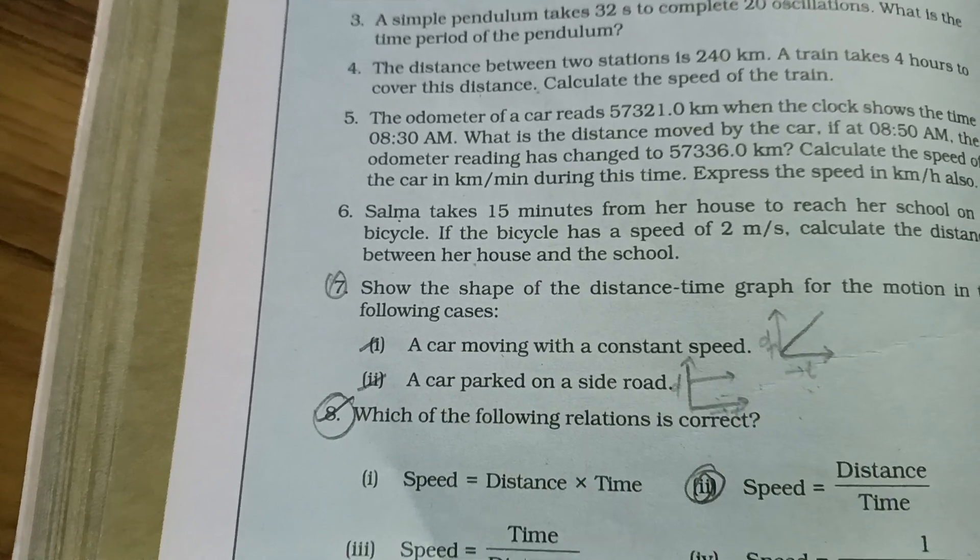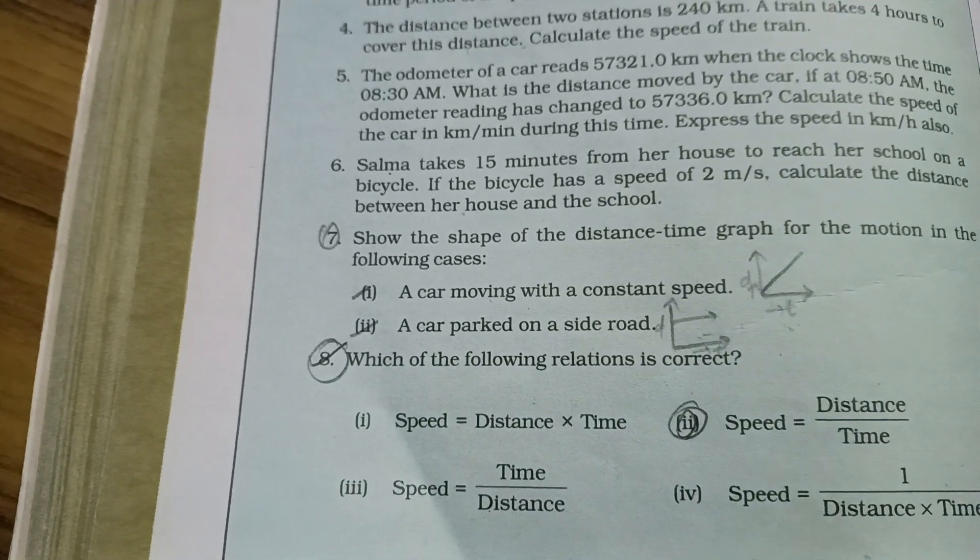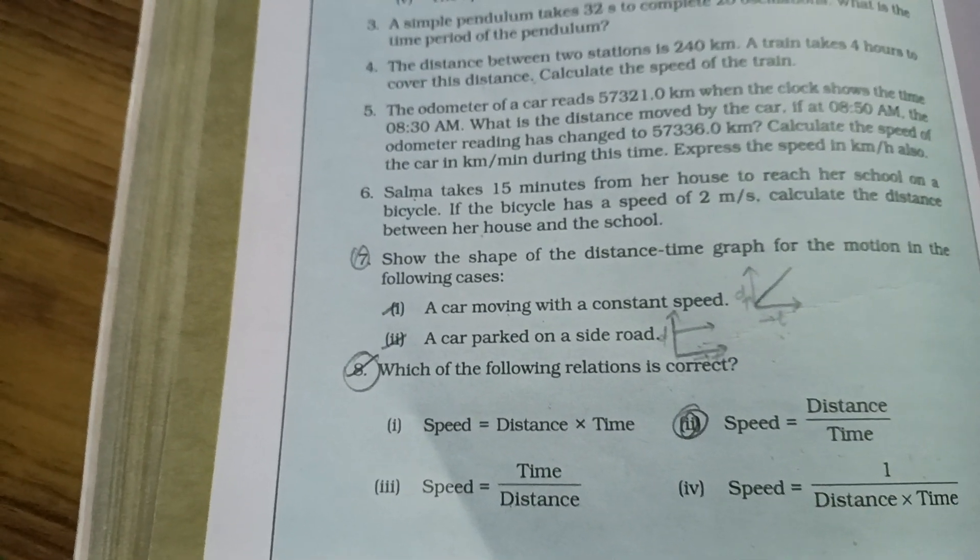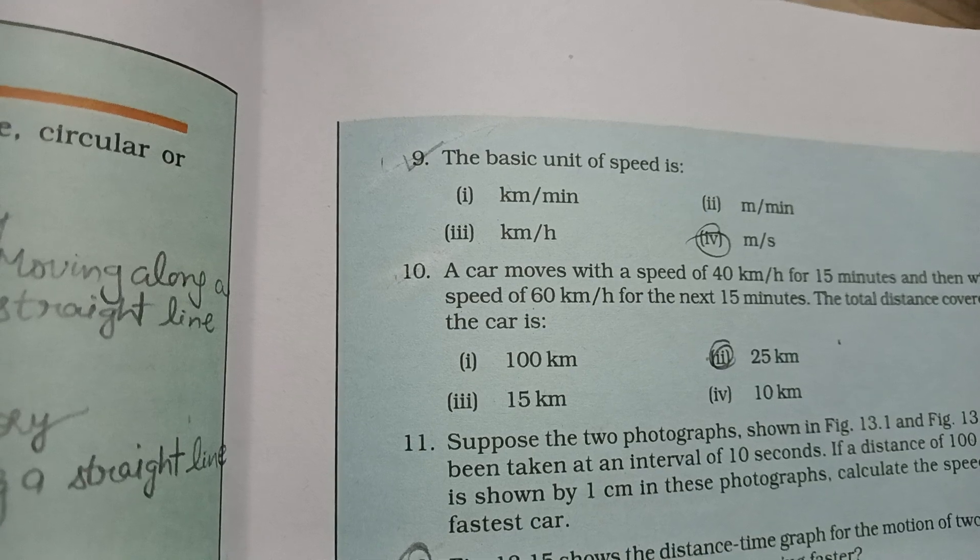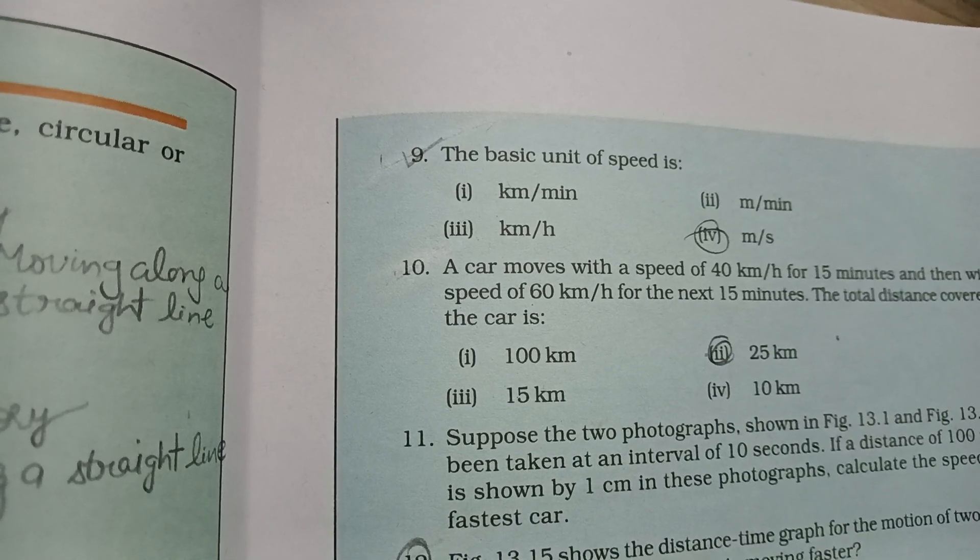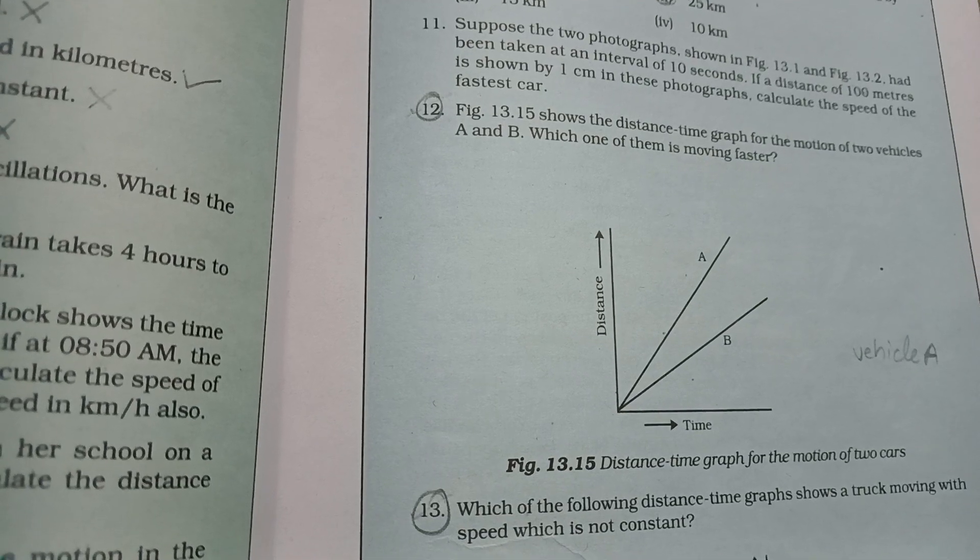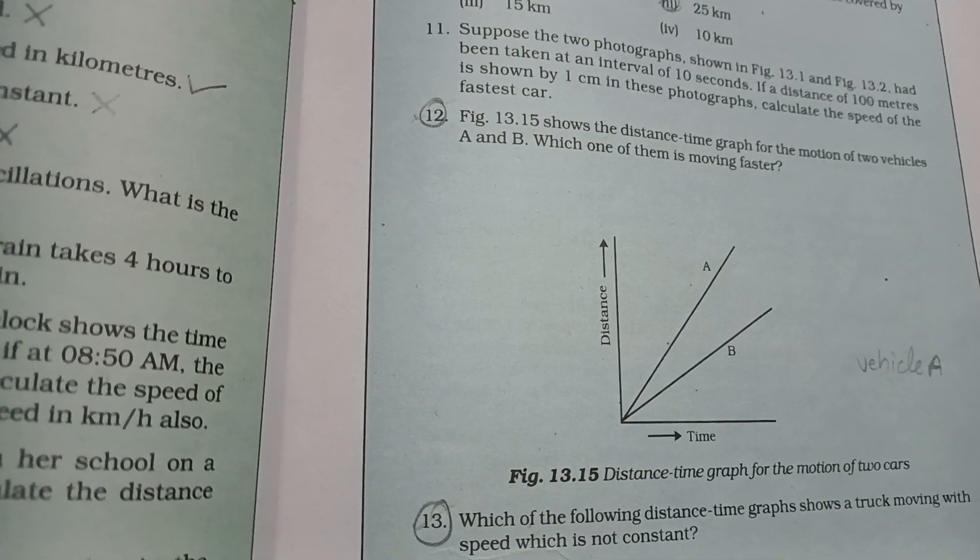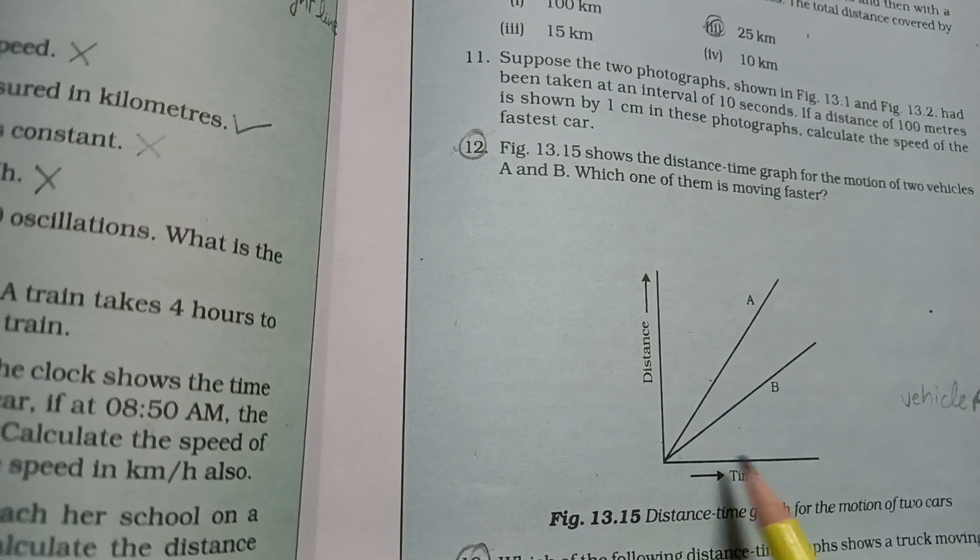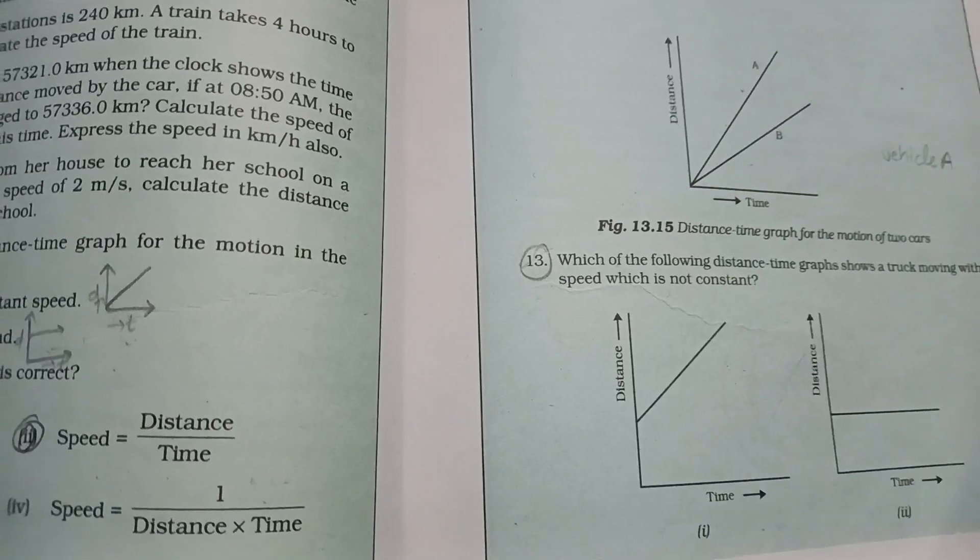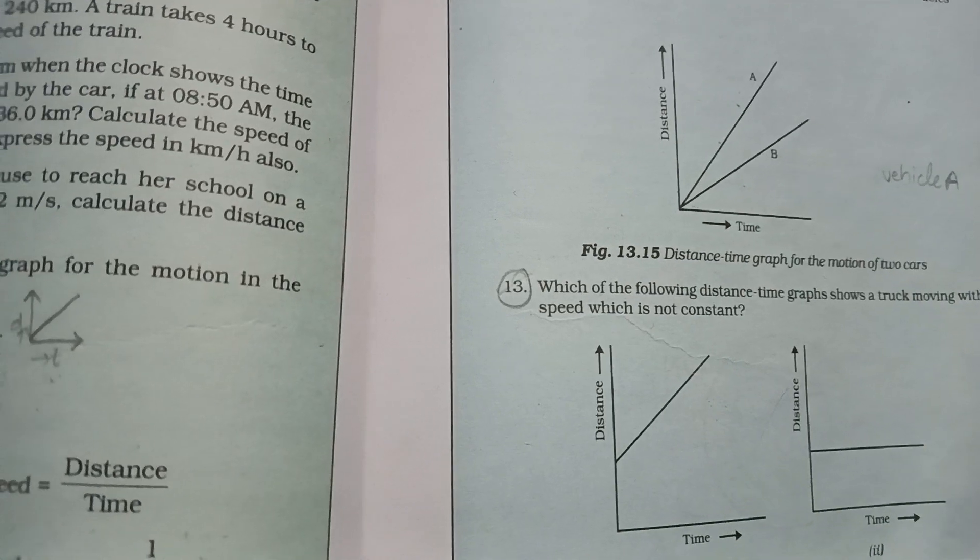Next, we have a relation to check which is correct - that is option B, speed is equal to distance upon time. Basic unit of speed - what is it? Meter per second.